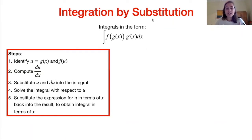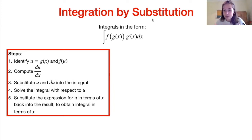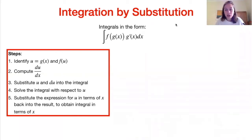The most important thing is knowing how to apply it, so we'll be doing lots of examples. Our first step is to identify what is our function g of x — we call that u for simplicity — and therefore what is our function f of u. The second step is to compute the derivative of u with respect to x. Then we substitute u and du into the integral to solve it with respect to u, simplifying it into something we know how to solve using the common integrals in our formula booklet. Finally, we substitute our expression for u back in terms of x into our solution.